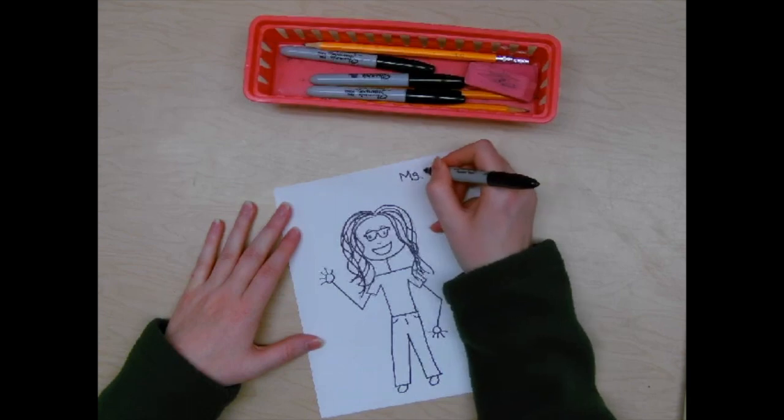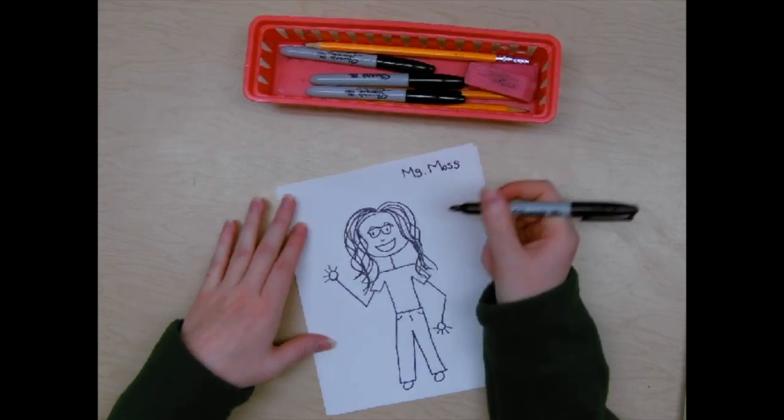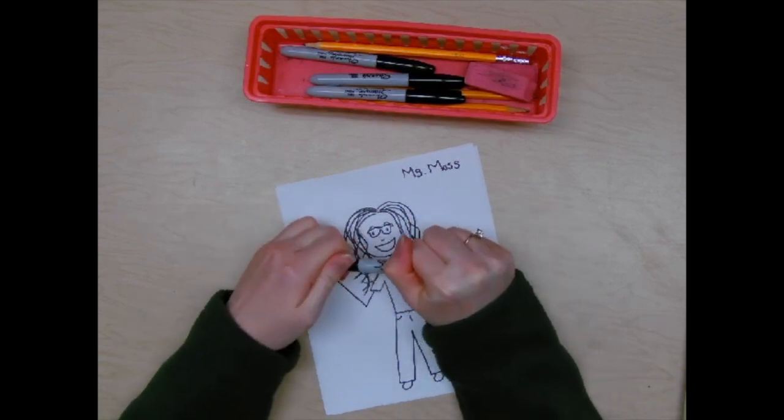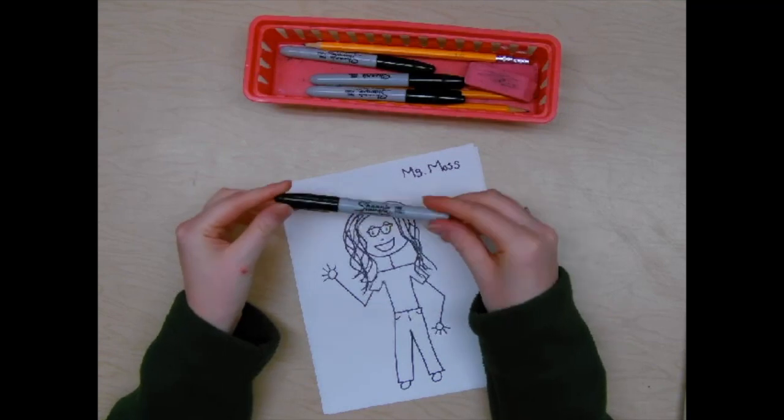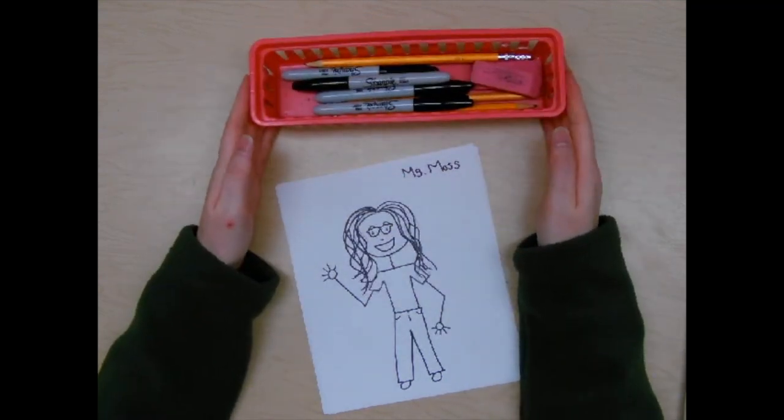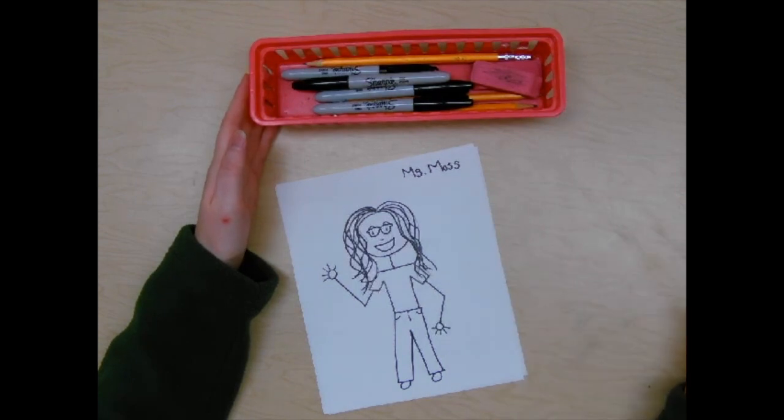You also need to go over your name with the Sharpie. When you're done, take the cap, put it back on. Press it on really tight so that the markers don't dry out and put the Sharpies back in the basket at your table.